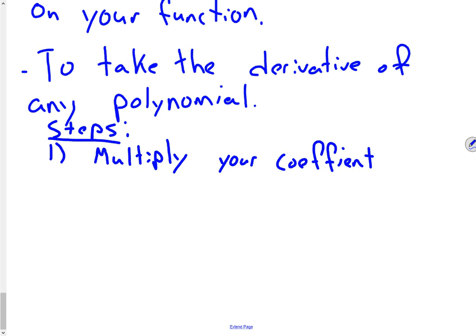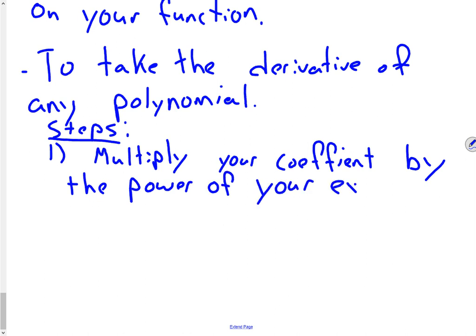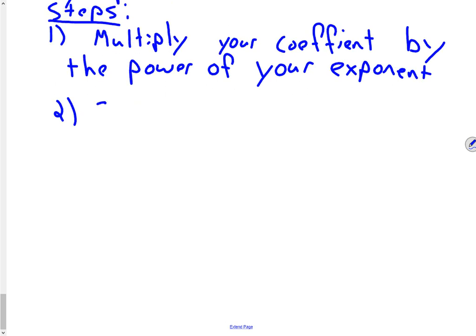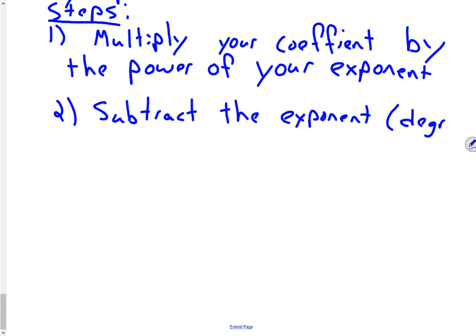Multiply your coefficient by the power of your exponent. And then subtract whatever your exponent is by one — there's your answer. Bring the exponent down, multiply by the coefficient, then reduce the power by one.